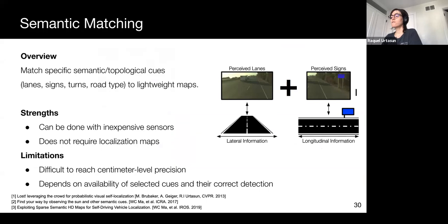Let's look at semantic matching. This approach leverages compact maps of a few kilobytes per kilometer, to store only semantic cues like lanes, signs, turns, and road type, all of which can be stored as vector maps. At runtime, the car must recognize these elements and match them against the vector map to localize.